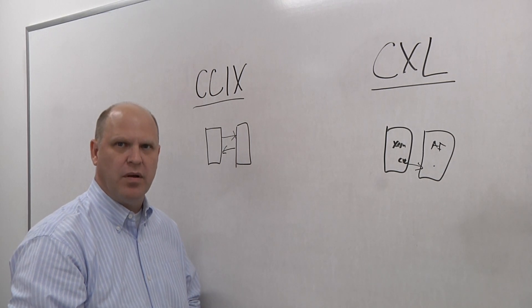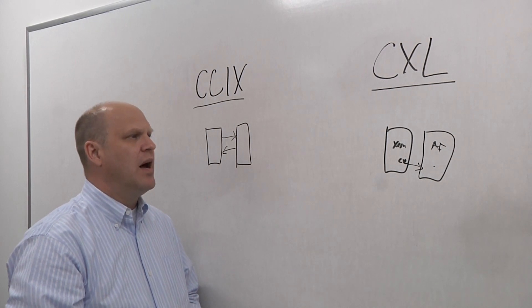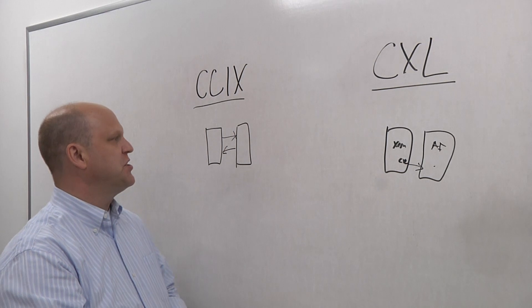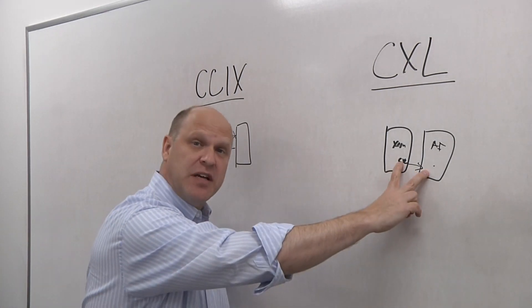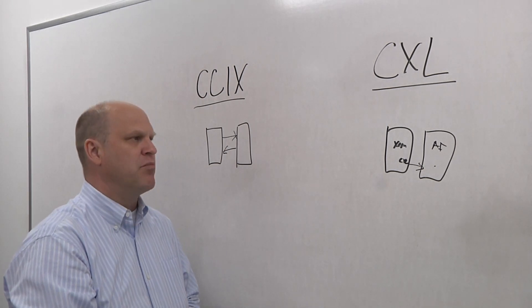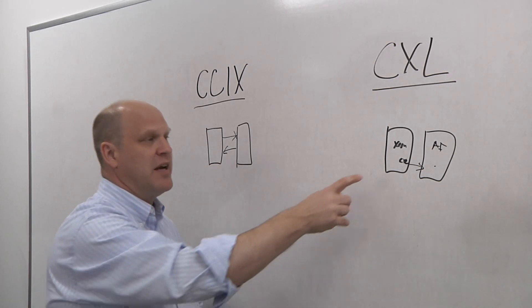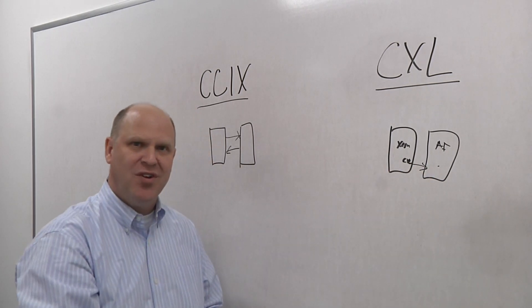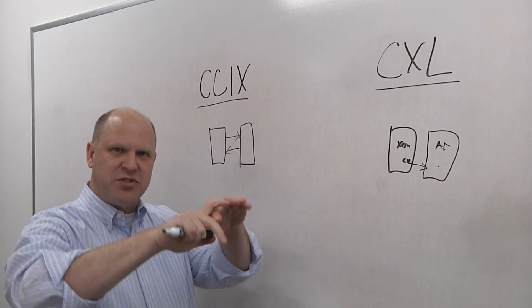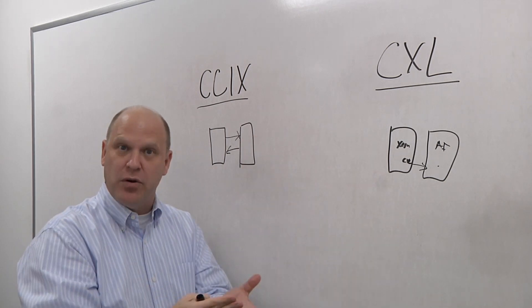Where would you use one versus the other? What's the advantage? The advantage of CXL is, from an implementation standpoint, it's a bit simpler. You are automatically assuming that you're going to be a companion chip to something else. So your requirements and your constraints are more narrowly bounded.